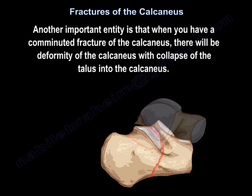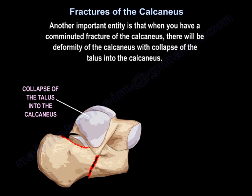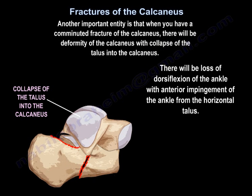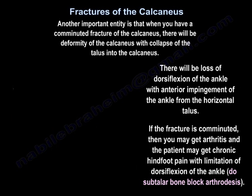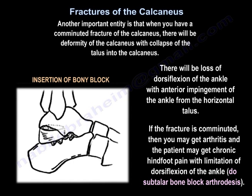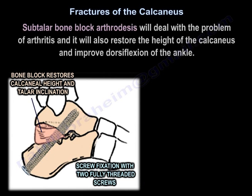Another important entity is when you have a comminuted fracture of the calcaneus — there will be deformity with collapse of the talus into the calcaneus. There will be loss of dorsiflexion of the ankle with anterior ankle impingement from the horizontal talus. If the fracture is comminuted, you may get arthritis and the patient may develop chronic hindfoot pain with limitation of dorsiflexion. That is why you perform distraction subtalar bone block arthrodesis, which deals with the problem of arthritis and also restores the height of the calcaneus and improves dorsiflexion of the ankle.